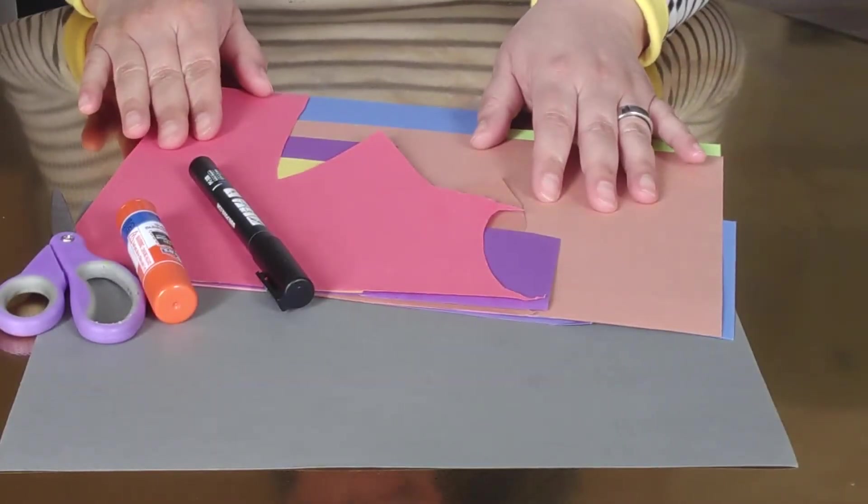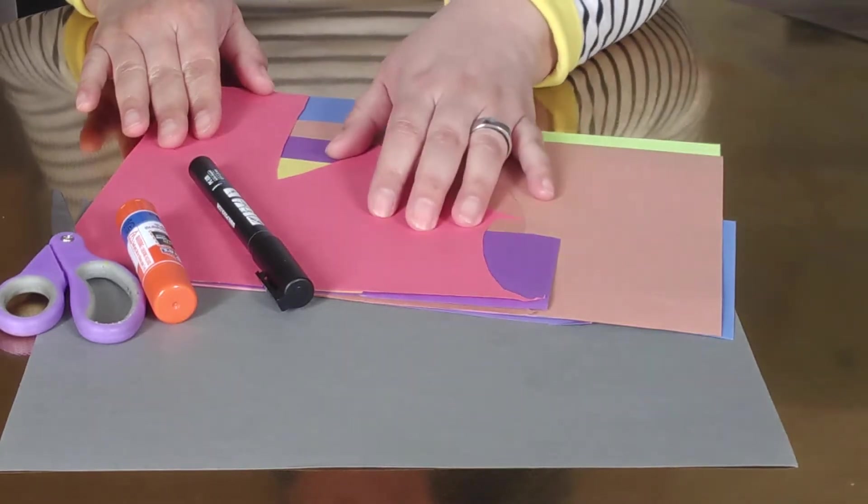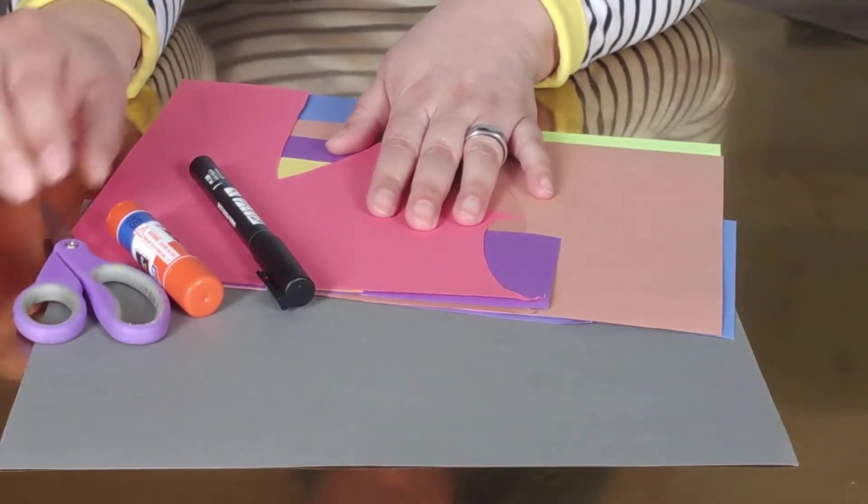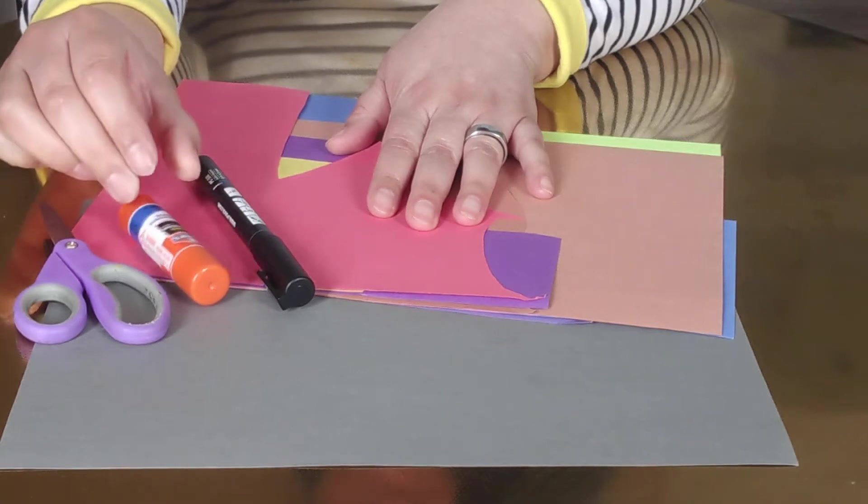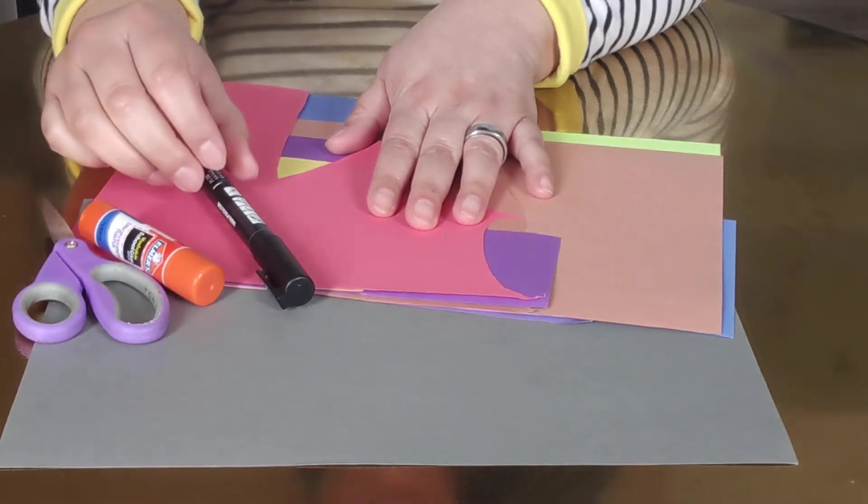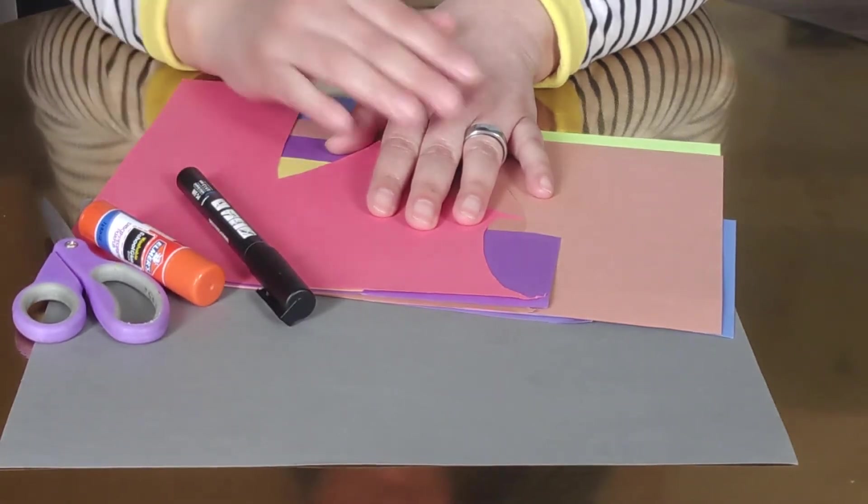Today what you'll need are about 10 different types of colored paper, scissors, glue (either a stick or a glue bottle), and a marker.